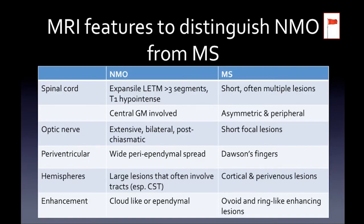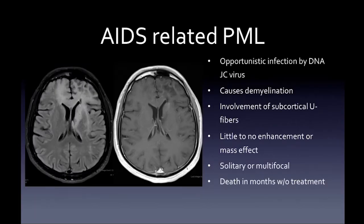MRI features distinguishing NMO from MS: in NMO the spinal cord is expansile, usually greater than three segments, involving the central gray matter. The optic nerve involvement is usually extensive, bilateral, and post-chiasmatic. Periventricular lesions are wide and hazy ependymal lesions, as opposed to the focal Dawson fingers of MS. The enhancement pattern in NMO is cloud-like or ependymal, versus the peripheral ovoid ring-like enhancing lesions of MS.